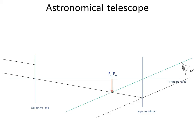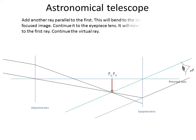Let's draw another ray. So another ray from this distant star, coming parallel to the first one, bends through the focal point, the same position of the image. And that hits the lens and will then bend parallel to the principal axis.